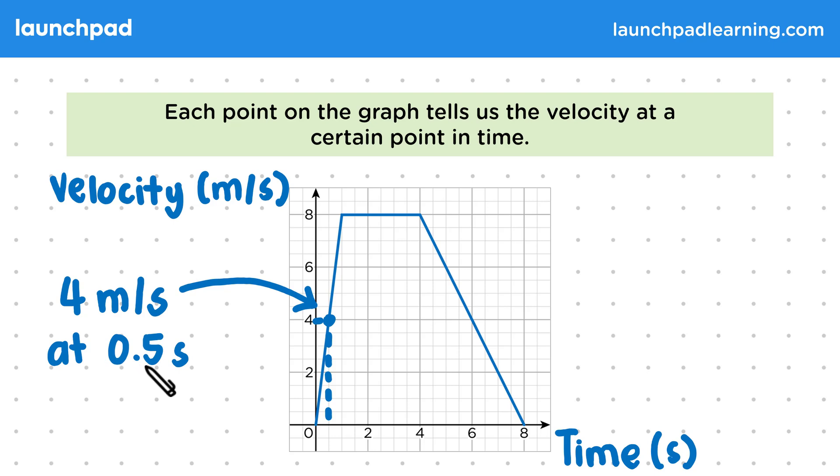Let's try reading the value of another point. Here we have a y value of 2 and an x value of 7. So the bird was travelling at 2 metres per second, 7 seconds after we started recording the velocity.